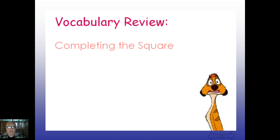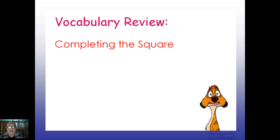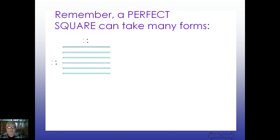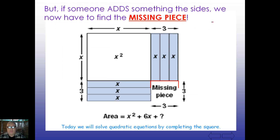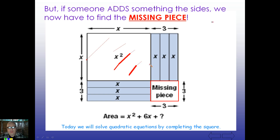Completing the square uses the idea that perfect squares can take different forms. We have a missing piece we need to fill in to complete the square. Looking at x squared plus 6x: here's your x squared and here's your 6x. What's the constant that's missing? If we divide 6 by 2 and square that, 6 divided by 2 is 3, and squaring gives us 9. So 9 is the missing constant.